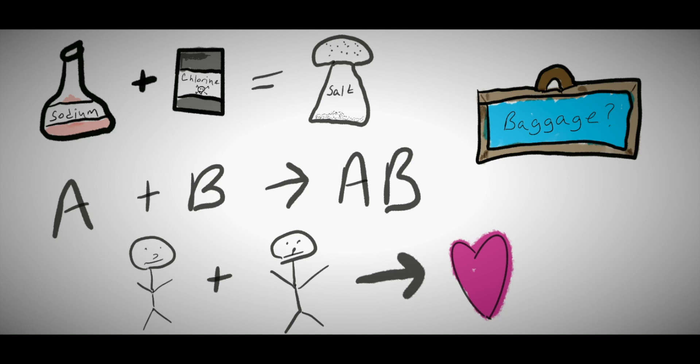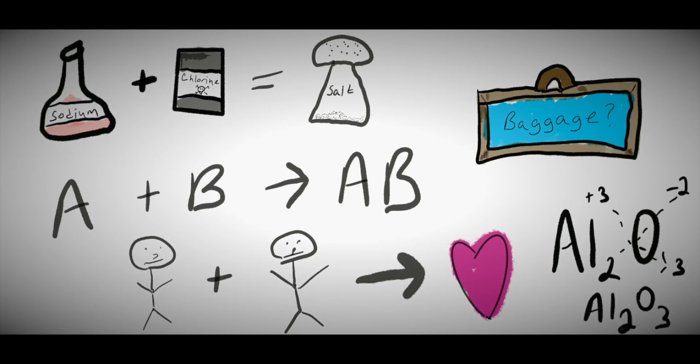Just to refresh you on how to use oxidation numbers, you assign each element its individual oxidation number. Then you cross the oxidation number from one element to the other element's subscript. You then reduce any needed subscript. For example, any subscript of one is not needed, and if both subscripts can be reduced by the same number, you can go ahead and reduce away.